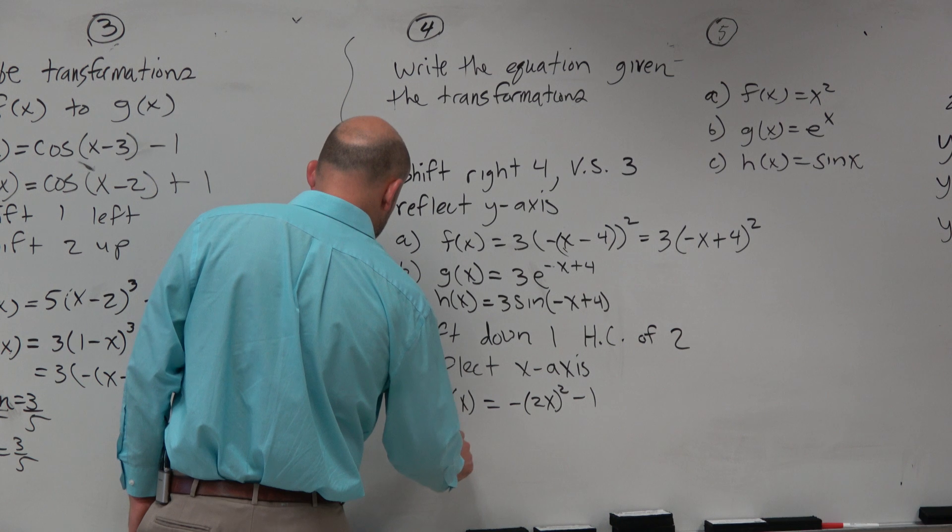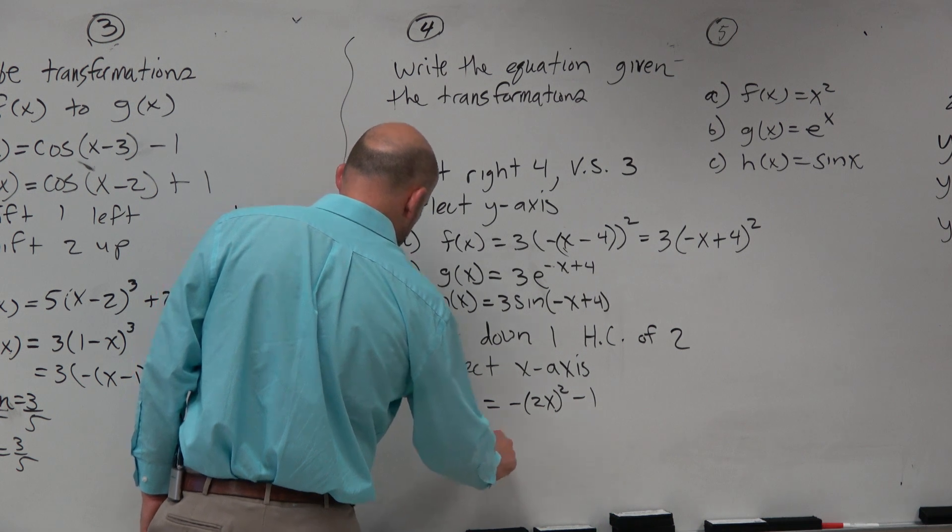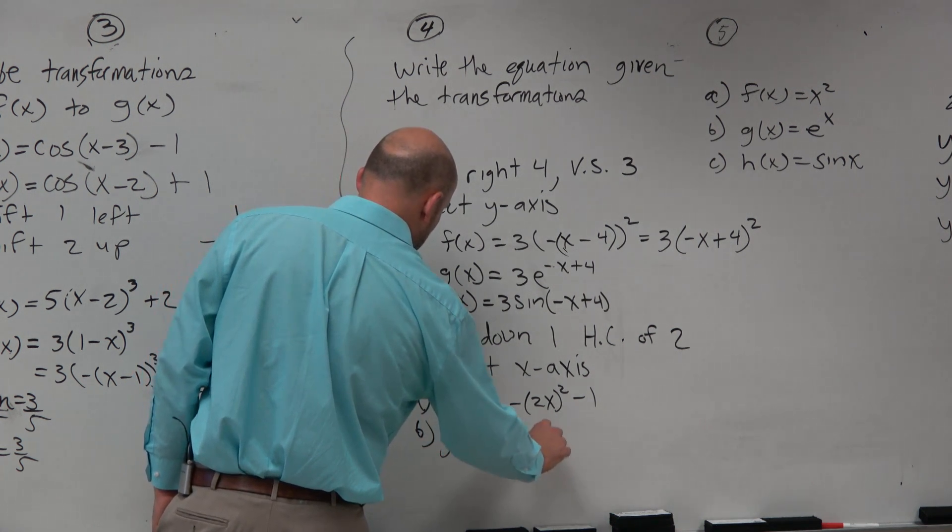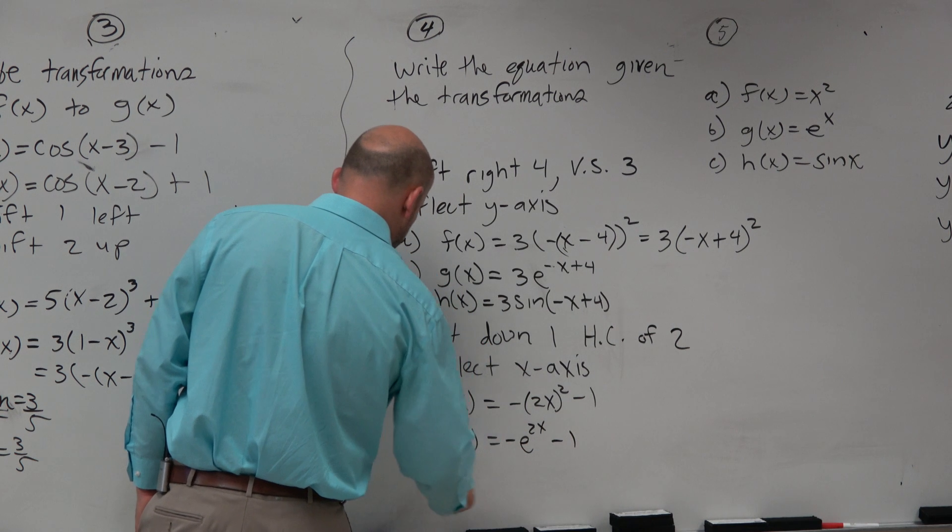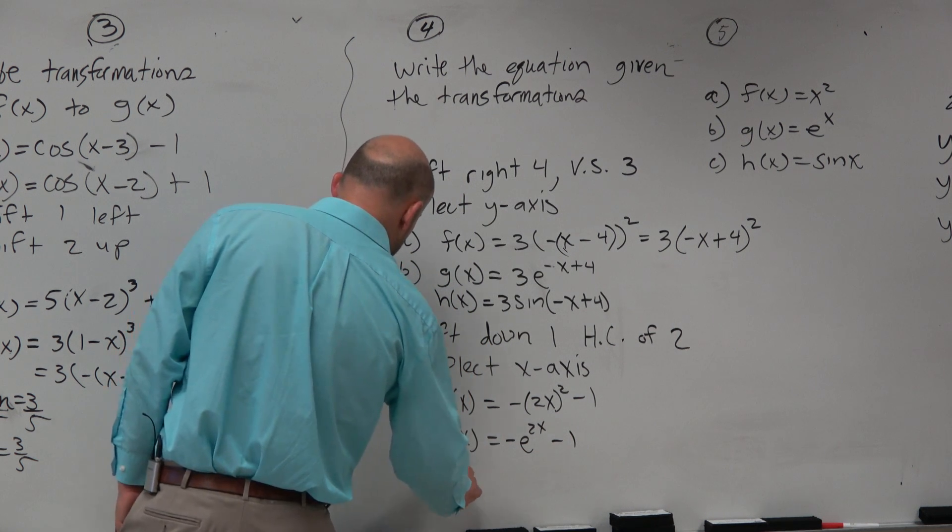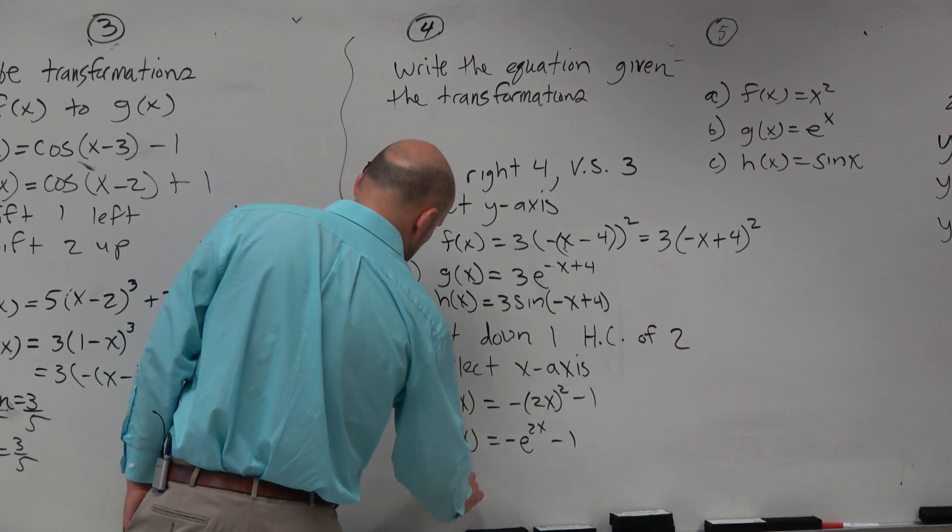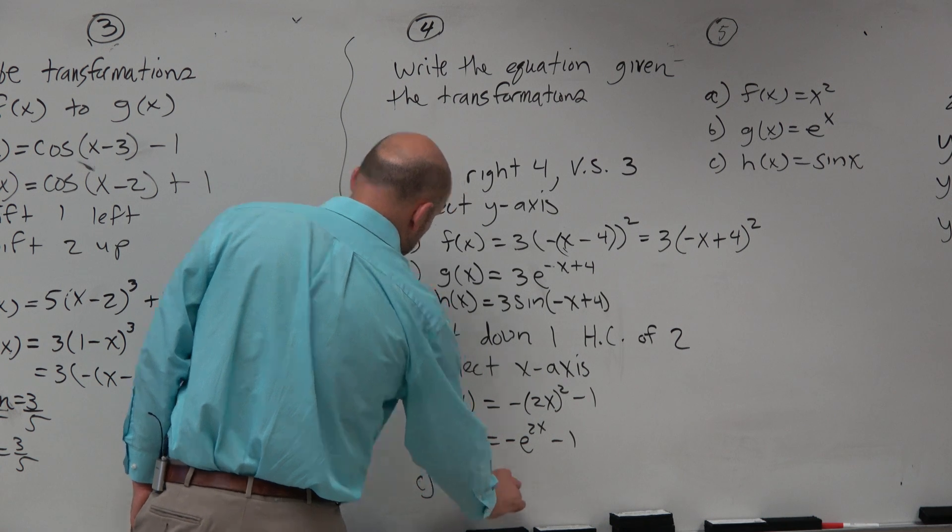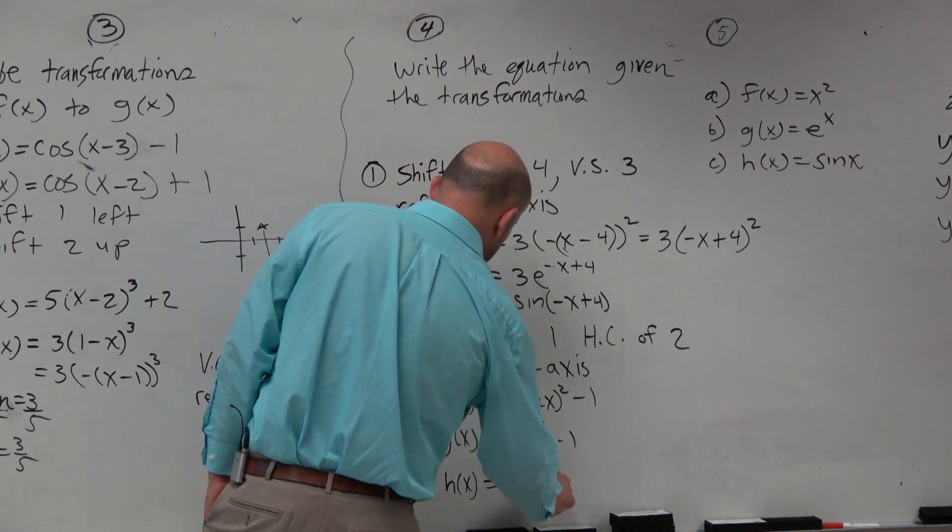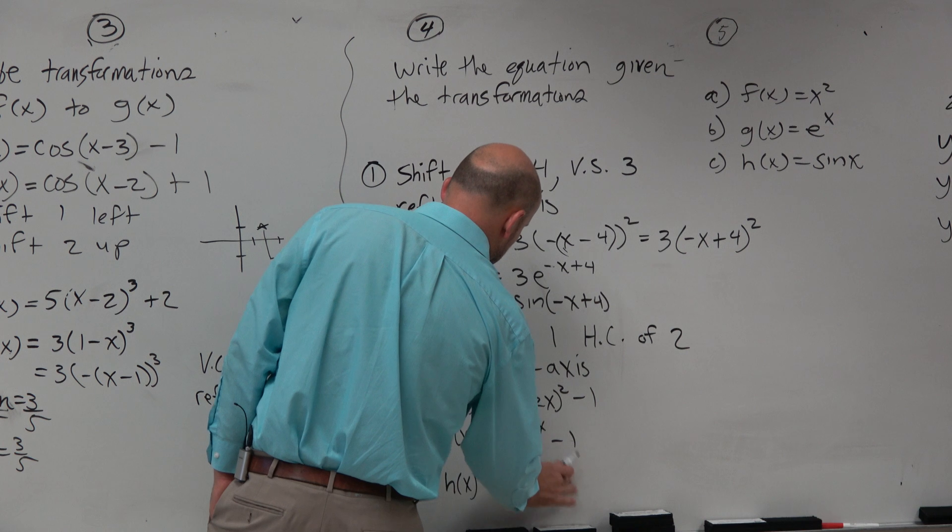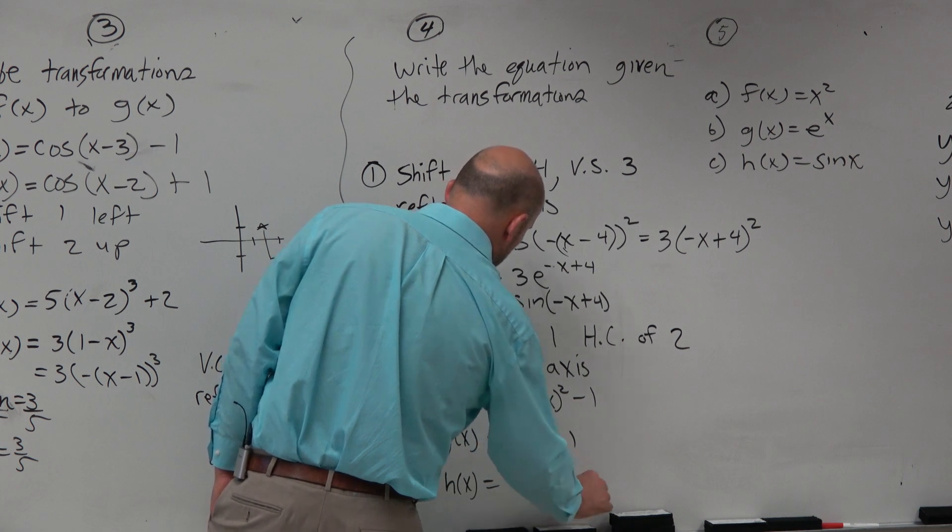And then for b. So g of x is going to be a negative e to the 2x minus 1. And h of x is a negative sine of 2x minus 1.